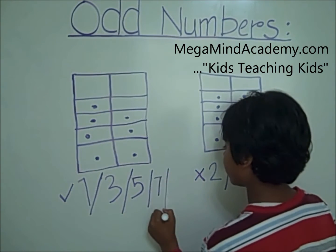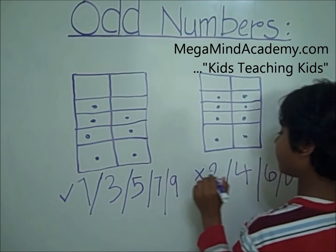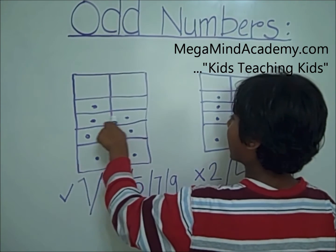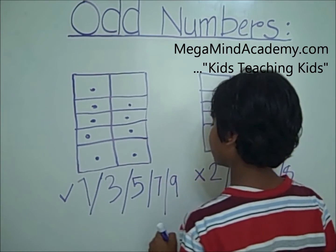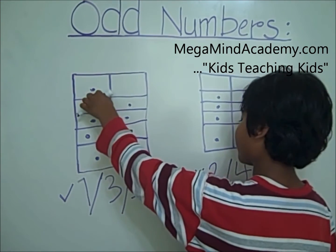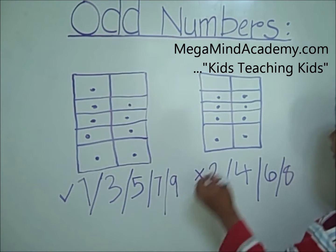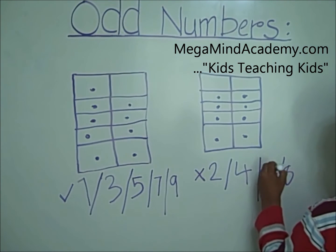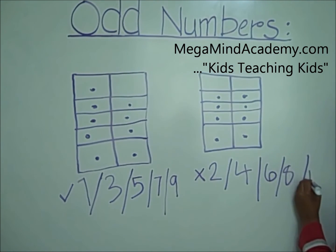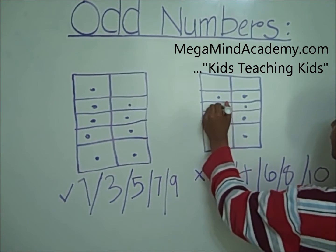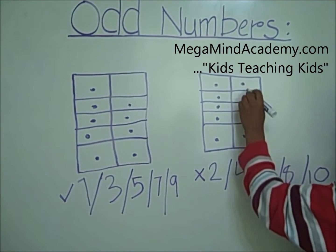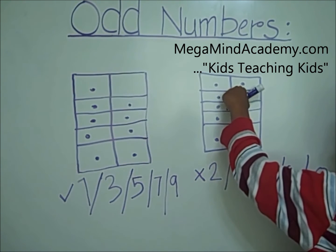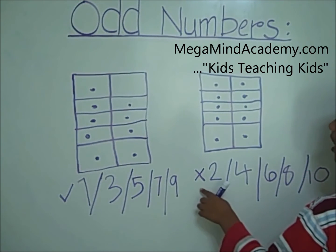What about nine? We draw nine dots: one, two, three, four, five, six, seven, eight, nine. Nine does not have a pair, so nine is an odd number. Let's go to ten. We draw ten dots: one, two, three, four, five, six, seven, eight, nine, ten. Ten has a pair, so ten is not an odd number.